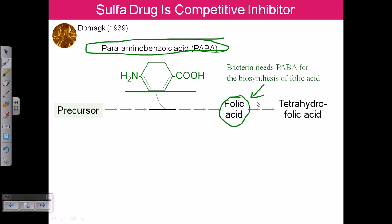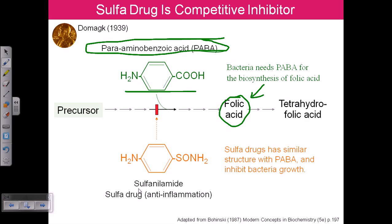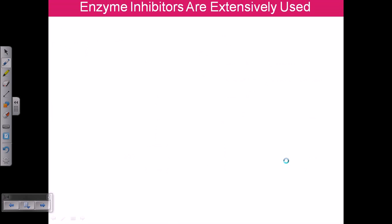Para-aminobenzoic acid is a very important raw material for the synthesis of folic acid, which is an important component of the bacterial cellular machinery. If we use a competitive inhibitor resembling PABA — which is sulfonamide, or sulfur drug — it closely resembles the structure of PABA. It replaces PABA by binding with precursors, blocking the conversion of precursors to folic acid. As a result, folic acid production is halted, and that is how sulfur drugs can treat many bacterial diseases.